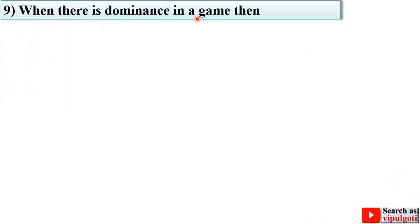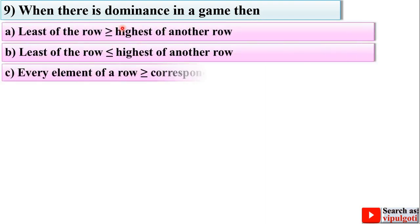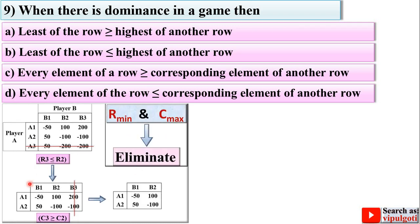Next question: when there is dominance in a game, options are as follows. Looking at this image, the key statement is that Row 3 (ρ3) is less than or equal to Row 2 (ρ2), meaning each element of ρ3 is less than or equal to the corresponding element of ρ2. In that case, we can eliminate the row minimum — the row minimum should be eliminated. So D is the right answer.